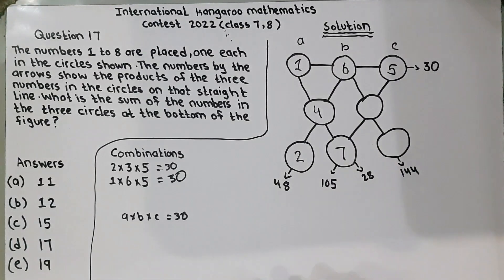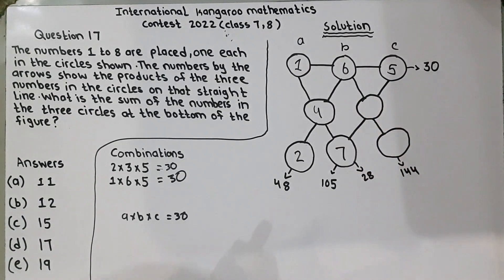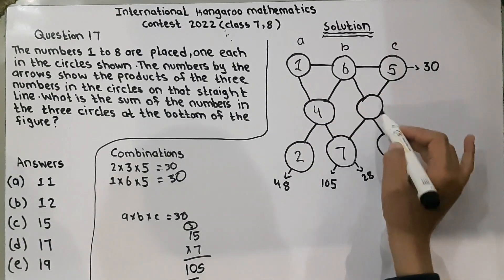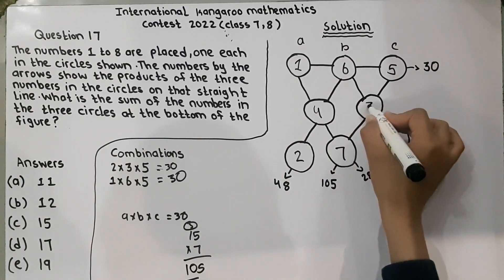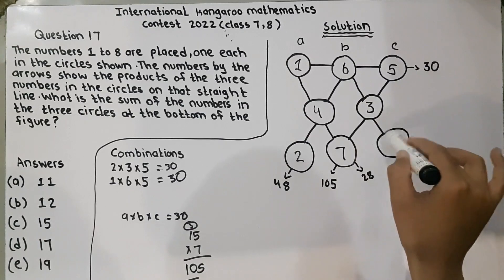So, we can check any other number. Like, we can check 3. So, 5 multiplied by 3 is 15. We can check it here. 7 times 5 is 35, and 35 times 3 is 105. So, 5 multiplied by 3 is 15. So, we will put 3 here. And, only this circle left.